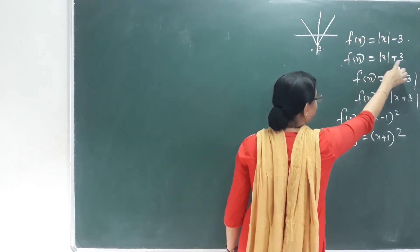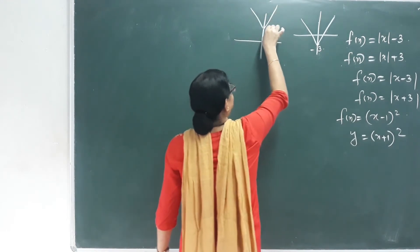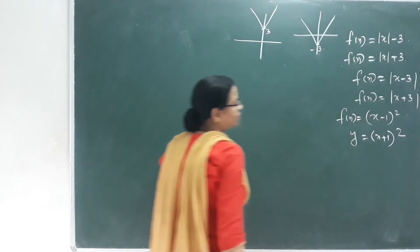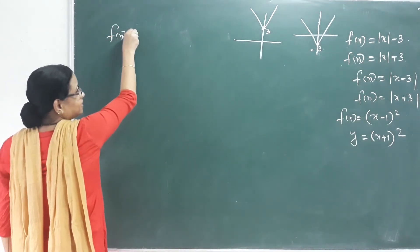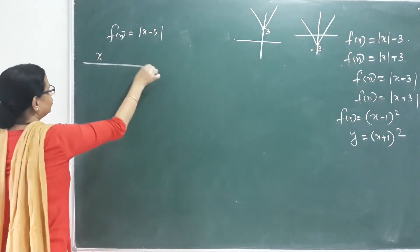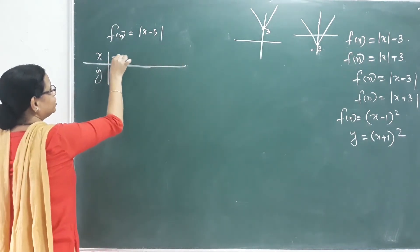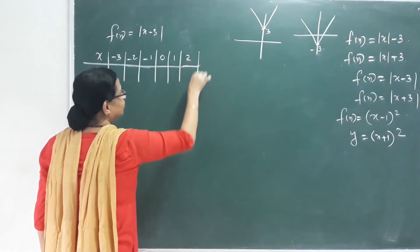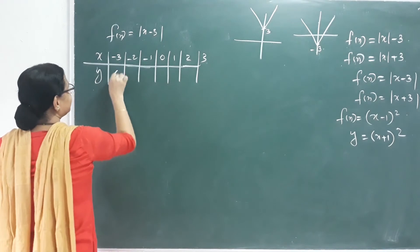F of x equal to mod x plus 3. That means positive 3 shifts to negative 3. This is the function. The domain is all real numbers, and we add the domain and range.